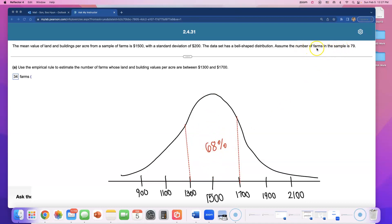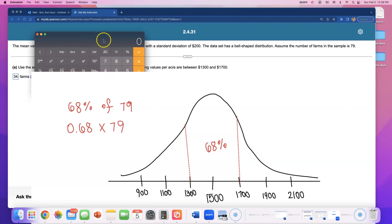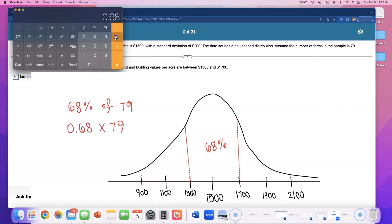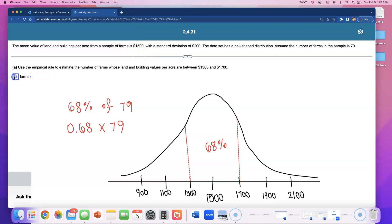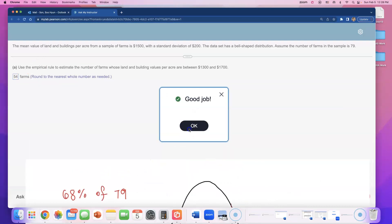Notice they gave you the number of farms in the sample is 79. So what you have to do is find what is 68% of 79, and you can do this by doing 0.68 times 79. Let me get my calculator up. 0.68 times 79, that comes out to be 53.7. I will round that up because 7 is bigger than 5, so my final answer will be 54 farms.